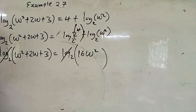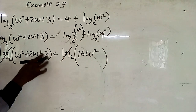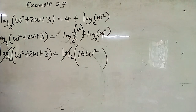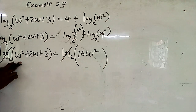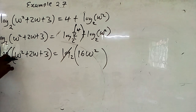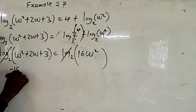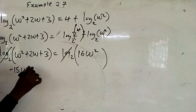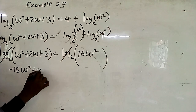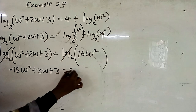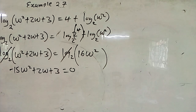You now ignore the logs on either side of the equation. After that, you get w squared plus 2w plus 3 equals 16w squared. Bringing w squared to this side it becomes negative: negative 16w squared plus w squared gives negative 15w squared, plus 2w plus 3 equals zero.